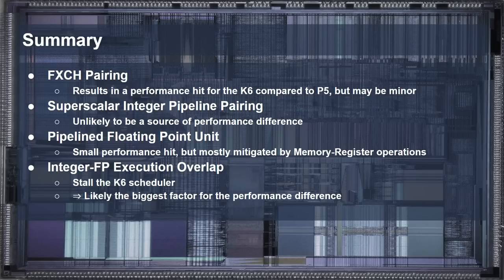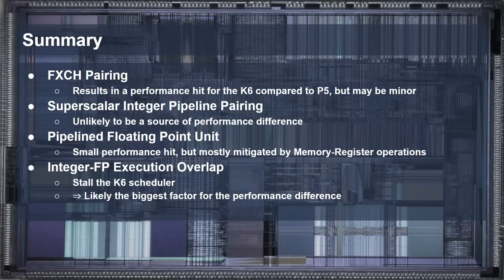In summary, the floating-point exchange pairing optimization may have resulted in a performance hit for the K6 compared to the Pentium, but it was likely minor. The superscalar integer pairing was unlikely to be related to the performance difference with Quake, especially since the K6 was stronger at integer execution. The lack of pipelining in the floating-point function unit would have caused a small performance hit, but was likely mitigated by the high usage of memory-to-register floating-point instructions. And finally, the integer/floating-point overlap with floating-point division stalled the K6 scheduler, resulting in many cycles of the processor not making forward progress — likely the biggest factor for the performance difference. This was fixed in a later K6 revision. What's normally brushed off as a pipelined floating-point unit difference is a lot more complicated when you start to look into it.